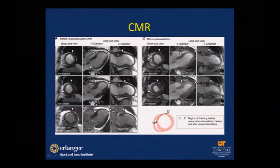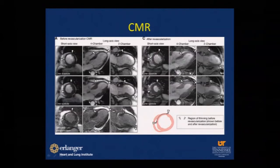This image shows the end-diastolic frame with myocardial thinning. The bottom panel shows delayed enhancement with a thin line of subendocardial scarring — visually about 25% of full myocardial thickness — suggesting myocardial viability. This patient underwent revascularization, and the post-revascularization panel shows wall thickening in diastole and systole with clear improvement and regained function.